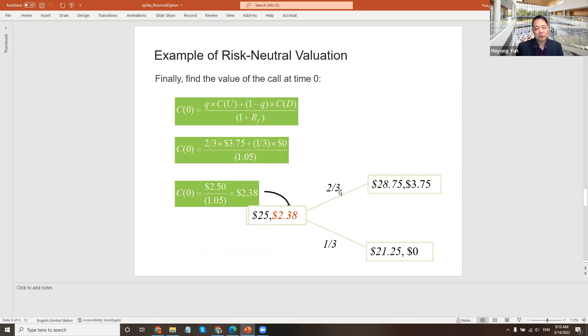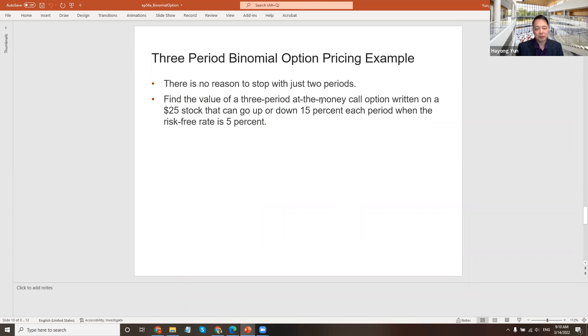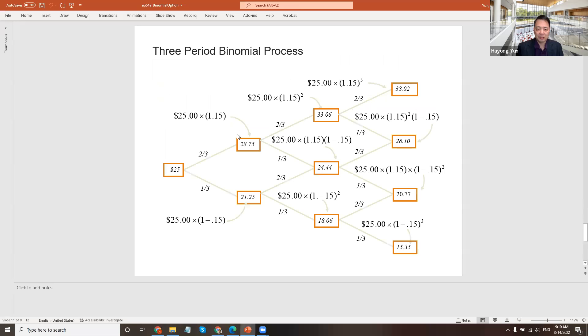Can you only do two periods? No, you can extend it to three periods and more. Same option: initial $25, can go 15% up or down each period, risk rate 5%. The first step is calculating all future stock prices. If it moves up, $28.75. Down, $21.25. From there: 15% up is $33.06, down is $24.44. From $21.25, down is $18.06. Then $38.02, $28.10, $20.77, and $15.35. These are all future stock prices.